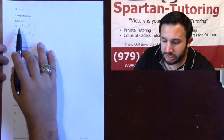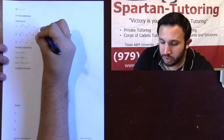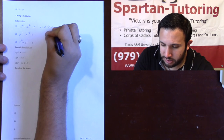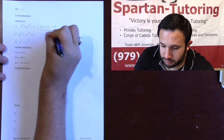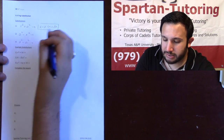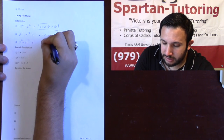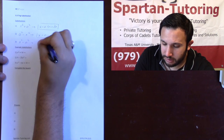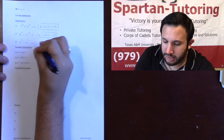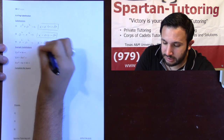If you see x squared plus a squared, your substitution is going to be x equals a tangent theta. If instead it's a squared minus x squared, you're going to have x equals a sine theta. And if you have x squared minus a squared, you're going to have x equals a secant theta.